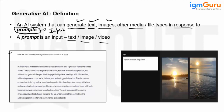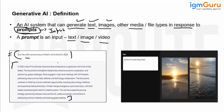For example, take ChatGPT: you type 'give me a 100-word summary of Modi's visit to the US in 2023.' When you write this in ChatGPT, it gives you the output. You pass an input — which as I mentioned has a special name: the prompt — and this prompt gives you a generated output.